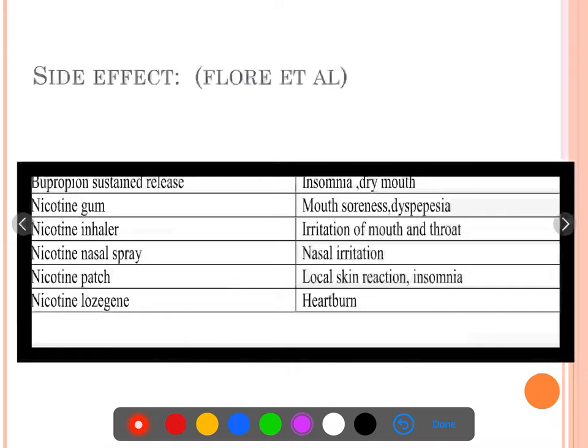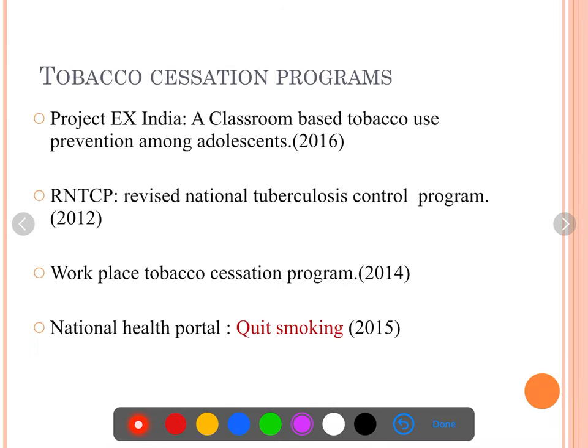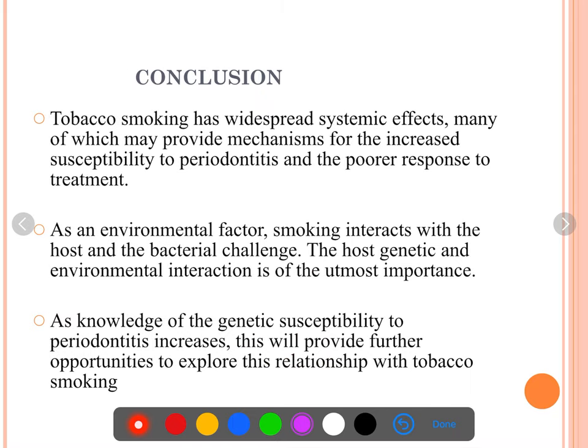Other agents include patches, gum, nicotine sprays, nicotine inhalators, and non-nicotine agents. Side effects should be mentioned if possible. For tobacco cessation programs, the latest notable one is from 2015 — the Quit Smoking national health portal — just remember that one.